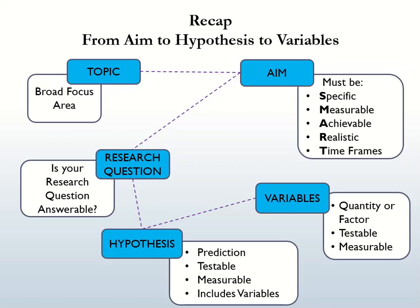Finally, we get to the variables. What is a variable? A variable is a quantity or factor that can be measured or observed and can be changed or manipulated. The different sections of the research process are not linked by arrows because the research process is not linear. For example, when you start formulating your aim, you may realize the research cannot be completed within the required time frames, in which case you will have to go back and change your topic.